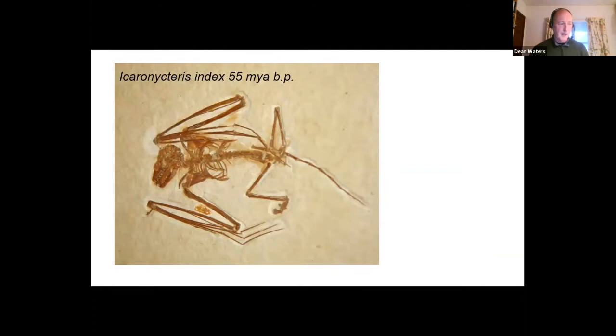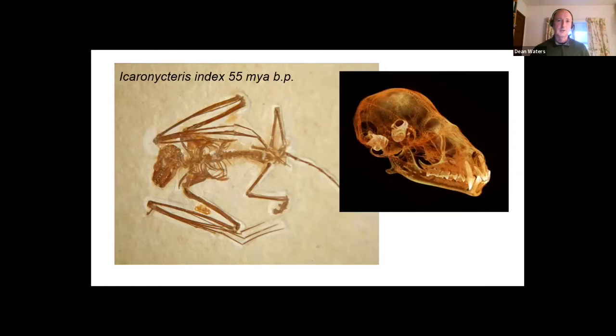Going back to my fossil bat, Icaronycteris index, this bat could echolocate. You might say how on earth can you know that a bat can echolocate when it's basically been through a panini press and is completely flat? Well, what you can do is put these fossils into very powerful cat scans or CT tomography scans, and you can look in detail using x-rays at the structure of their bones.